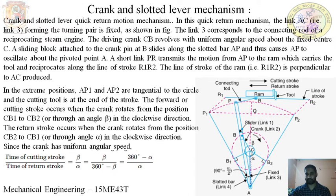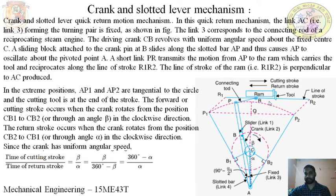The crank rotates at a uniform angular velocity and is connected by a slotted bar. The angle AP is fixed. The extreme positions of the slotted bar AP1 and AP2 are tangential to the rotation of the crank. As the RAM moves from R1 to R2, cutting action takes place. As the RAM moves from R2 to R1, the return stroke takes place. The power stroke takes place when the crank moves through angle B1 to B2, which is greater than 180 degrees. The return stroke is performed at a higher speed than the forward stroke.